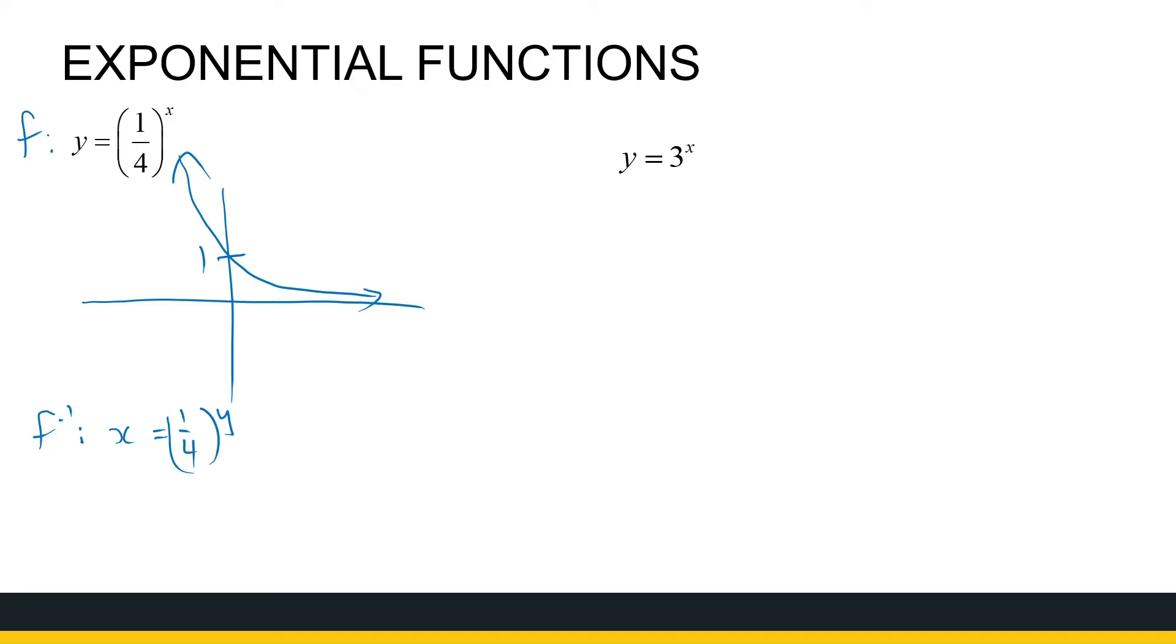Because what a logarithm means, if I've got log base 10 of 100 is equal to 2, this number on this side, this 2, is just the exponent. So what this statement means is 10, this is the base to the power 2, is equal to 100. So converting between exponents and logarithms, always just remember, with a logarithm, the number on this side is always the exponent.